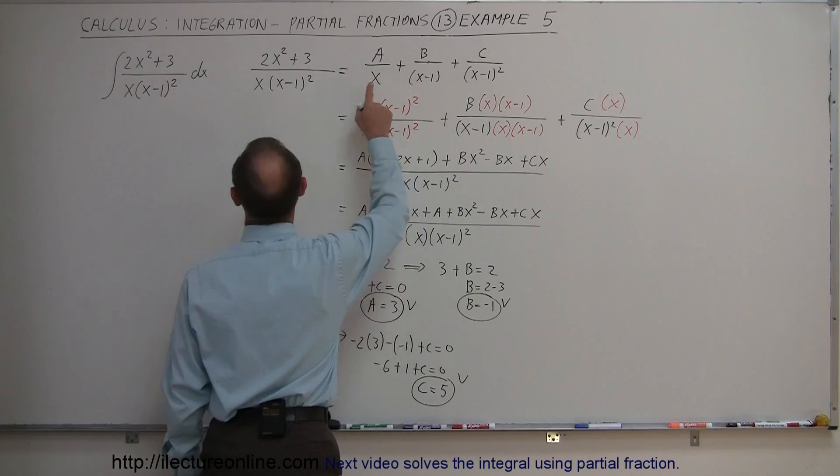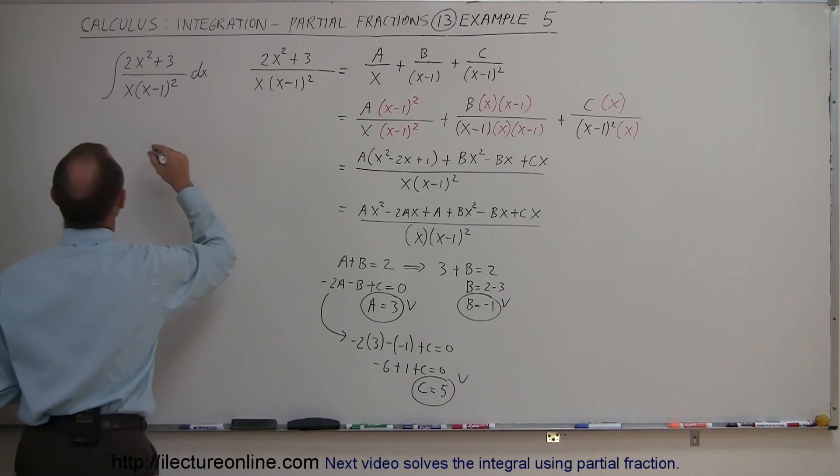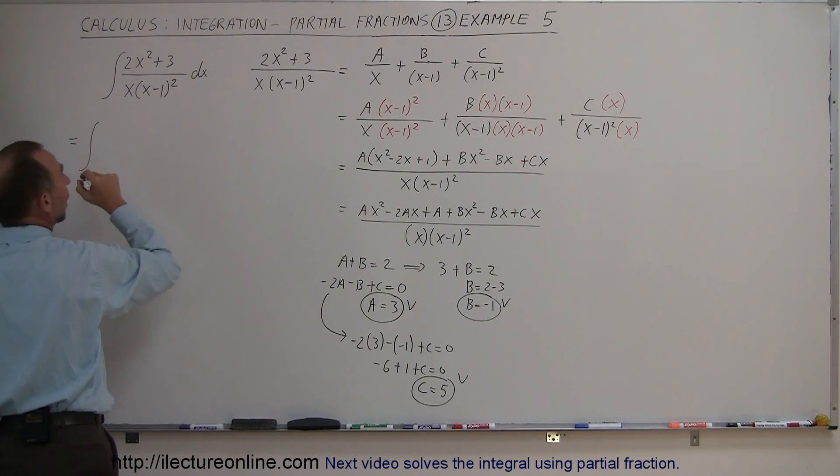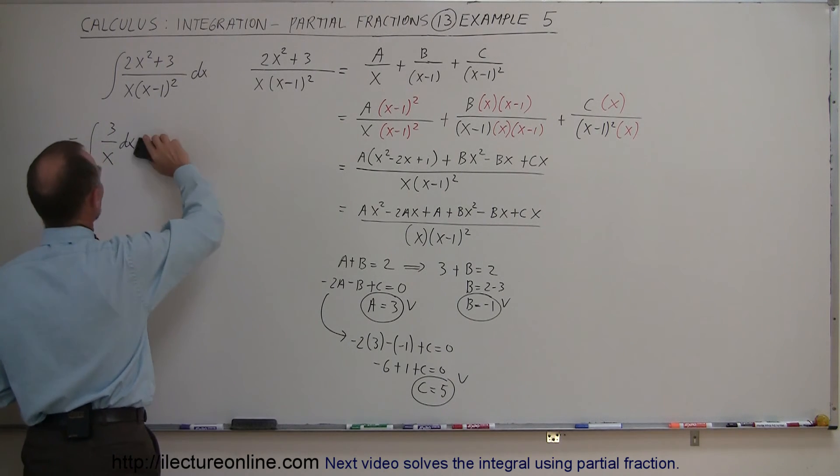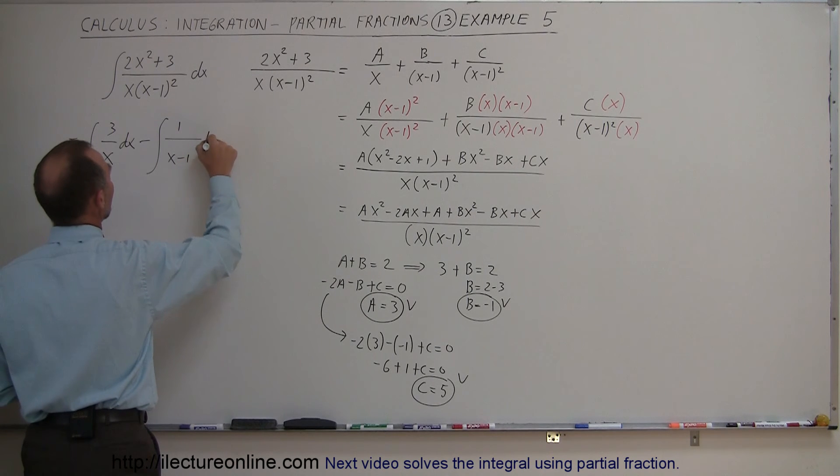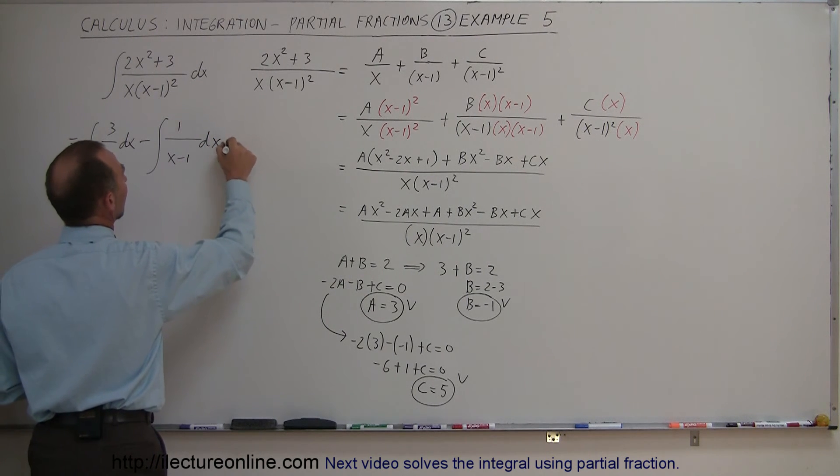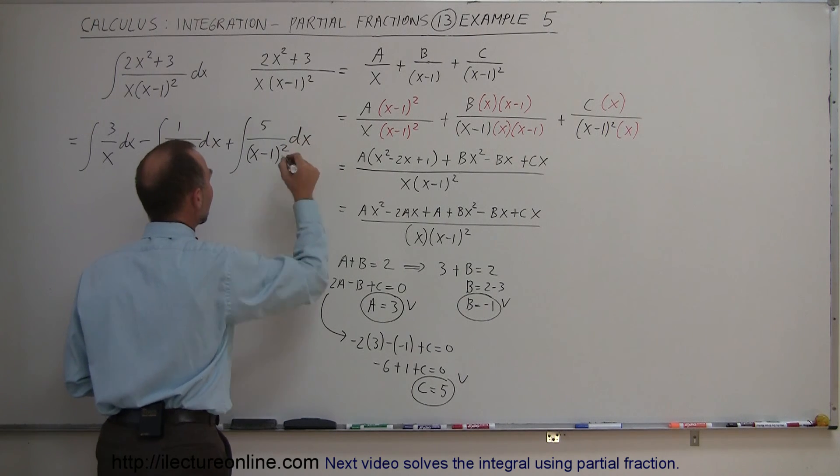Which means I can now write my original integral in terms of the sum of the three partial fractions just knowing what A, B, and C are equal to. So this is equal to the integral of A is 3 divided by x times dx plus B, B is a minus 1, well since B is a minus 1 I might as well put a minus here. So minus the integral of B which is 1 then divided by x minus 1 times dx and finally plus the integral C in this case is 5 divided by the quantity x minus 1 quantity squared of course also times dx.